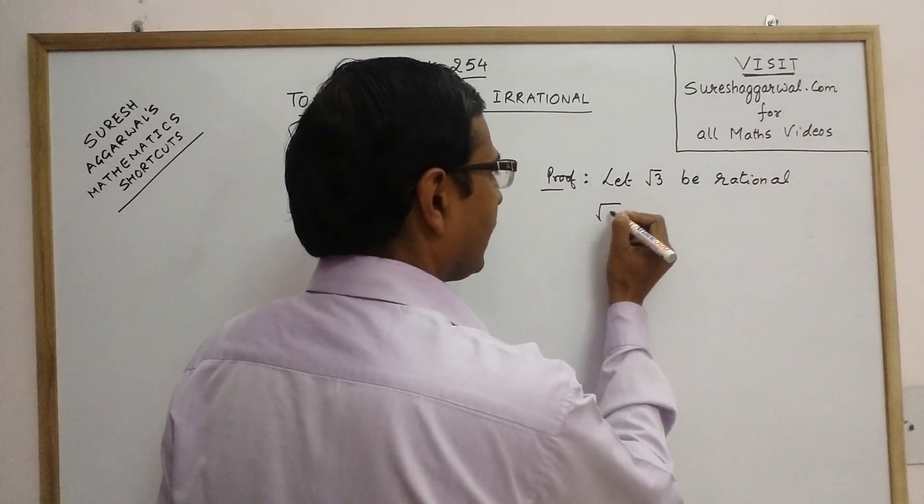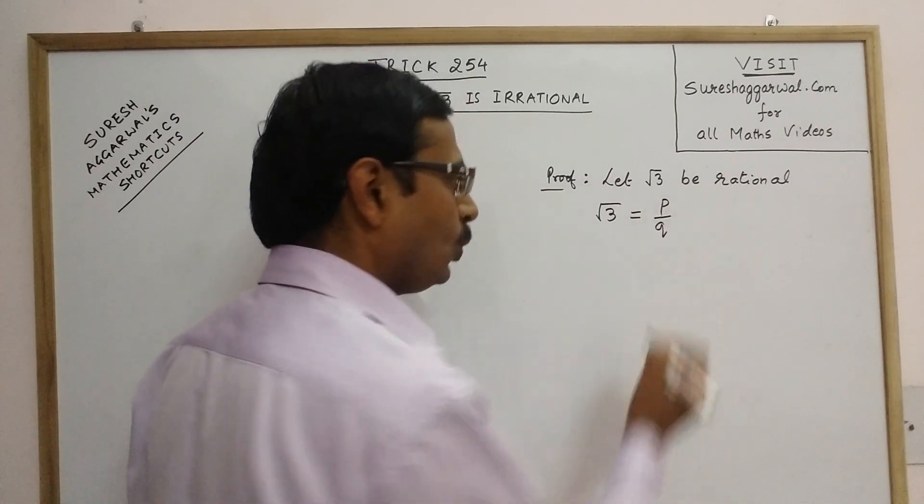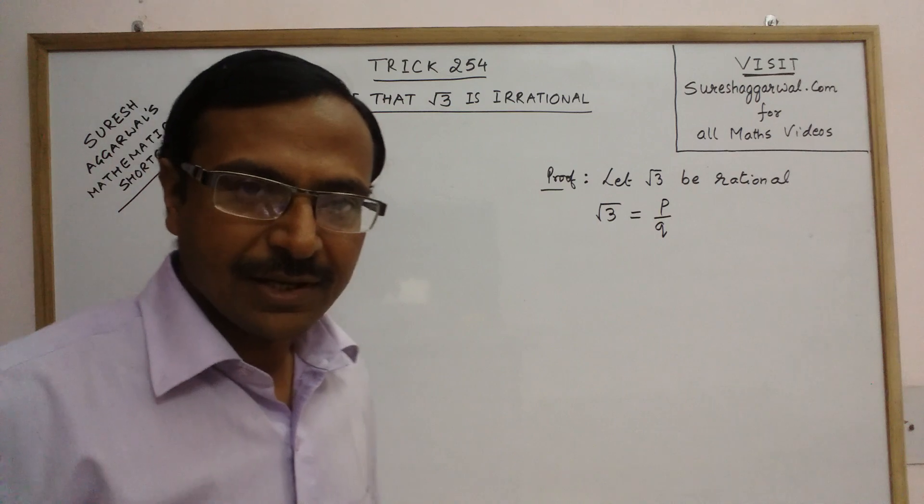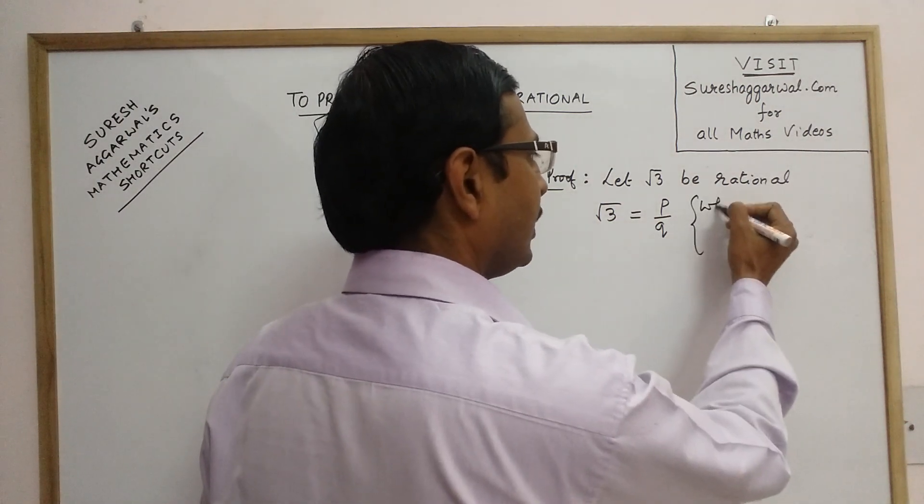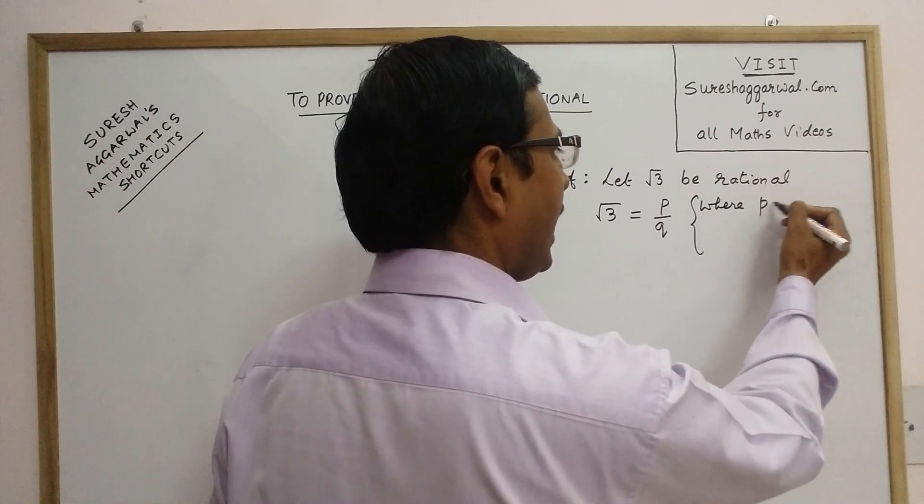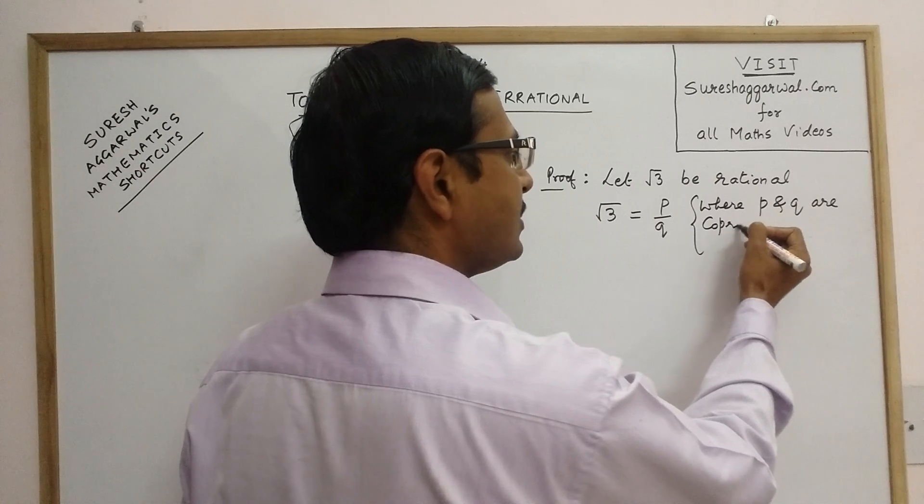then that number can be expressed in the form of p upon q and there is a condition associated with this, where p and q are co-prime integers.